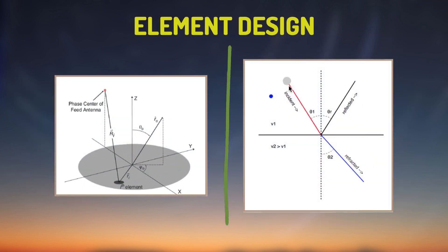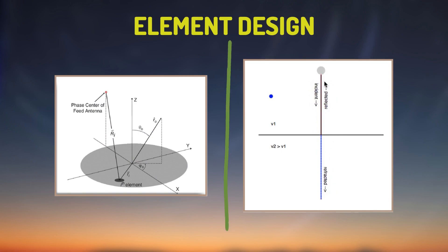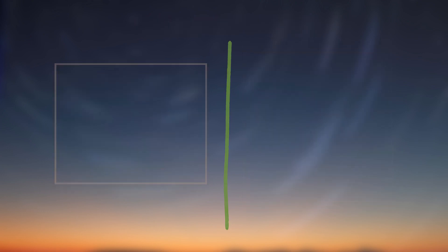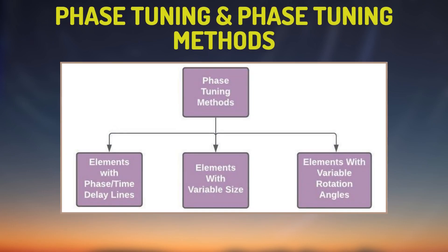Each unit cell is illuminated by the feed antenna which is located at Z-axis with or without offset angle. To focus the beam in a certain direction, a progressive phase distribution is assigned to the elements. A critical step in designing a Reflectarray Antenna is selecting a phase tuning methodology. By this way, we can achieve desired phase tuning range.